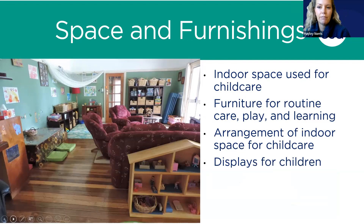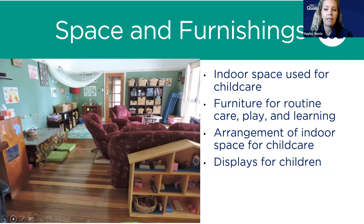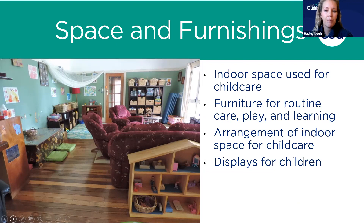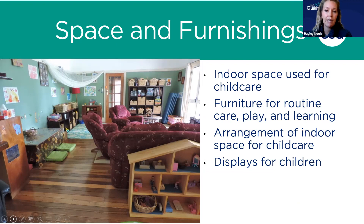Thanks Kristen. Now we're going to start diving into the subscales and items in the book. We won't dig too much into each indicator, but rather point out key pieces that are important to know from each item. Our first subscale is space and furnishings. Here we'll take a look at indoor space, furnishings, arrangement of indoor space, and displays.